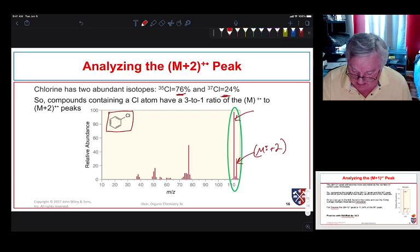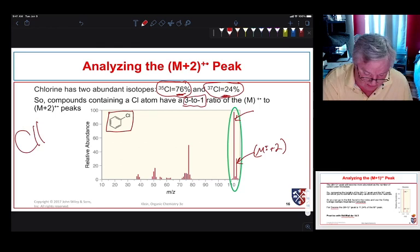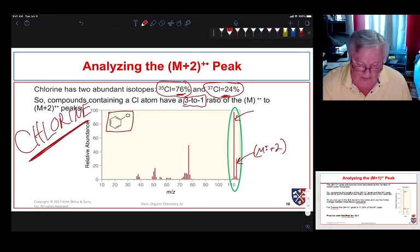So it's due to the fact that the abundance of chlorine 37 is 24%, and the abundance of chlorine 35 is 76%. So compounds, when we see that 3 to 1 ratio of the M plus to the M plus 2 peak, we want to think chlorine. As soon as we see that, we probably have chlorine in our molecule. Very diagnostic.